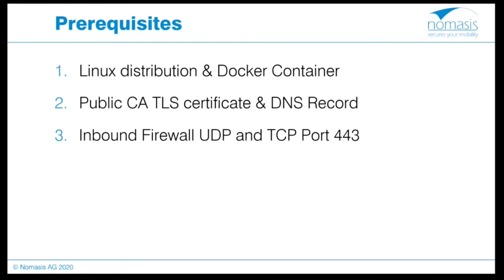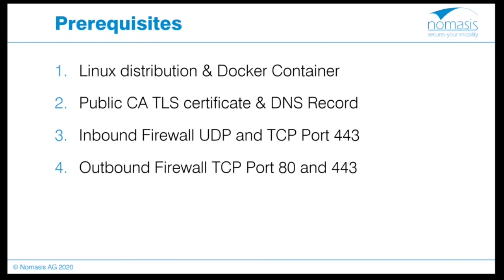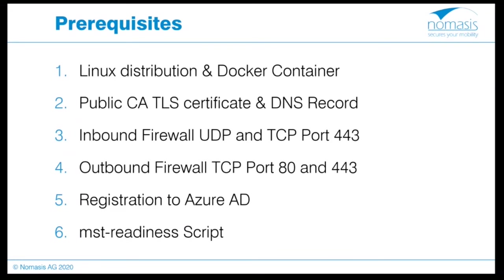Third, ensure that for gateway functionality, inbound port 443 for UDP and TCP traffic is open on the server, and that TCP outbound ports 80 and 443 are open for interaction with Microsoft Intune. Also verify that the public IP address is added to your external firewall to forward requests on port 443 pointing to the FQDN on the gateway server. Fifth, enable conditional access by adding Microsoft Tunnel Gateway as a cloud app to Azure Active Directory. Finally, Microsoft recommends running the Tunnel Readiness tool before installation. The script checks if Microsoft Intune endpoints are reachable and validates that the Azure Active Directory account used for installation has the required permissions.